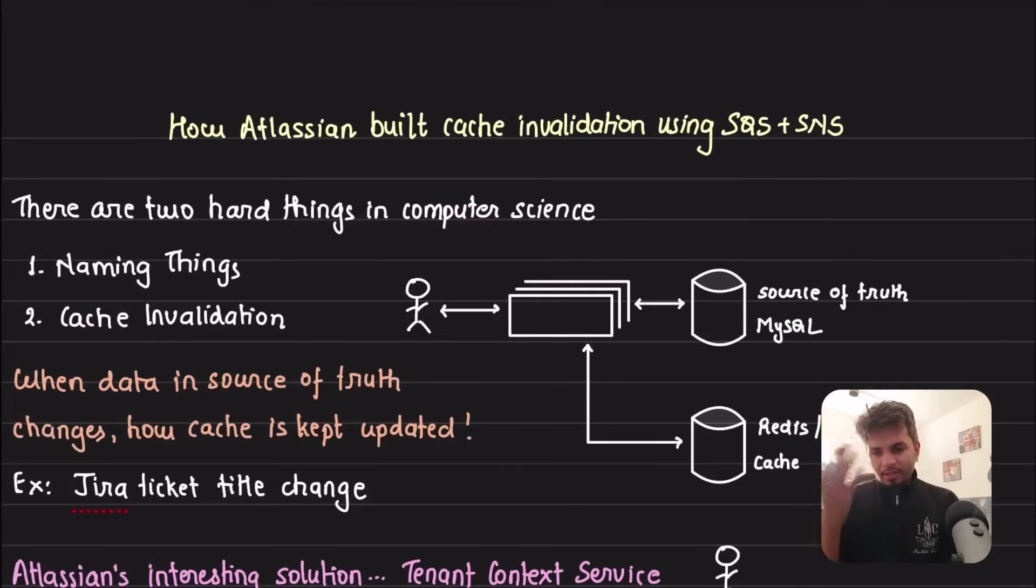You would have heard this very famous quote that there are two hard things in computer science. The first one is naming things - variables, functions, and whatnot - and the second one is cache invalidation. This entire video is all about cache invalidation and how Atlassian did it.